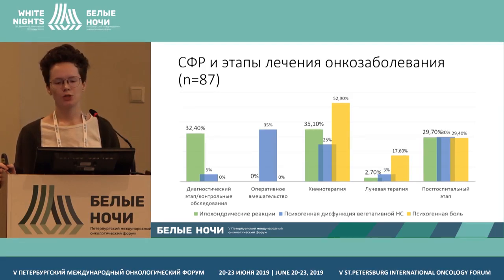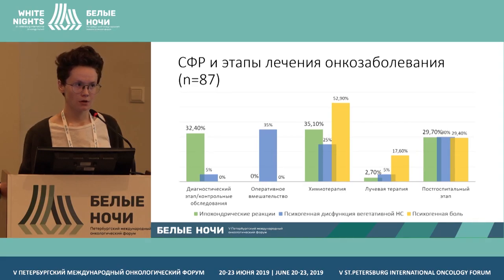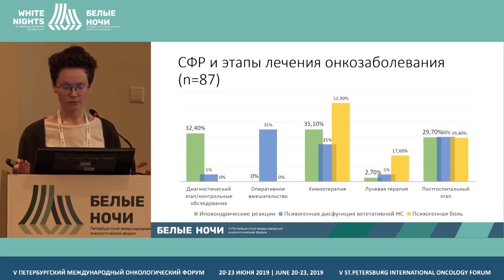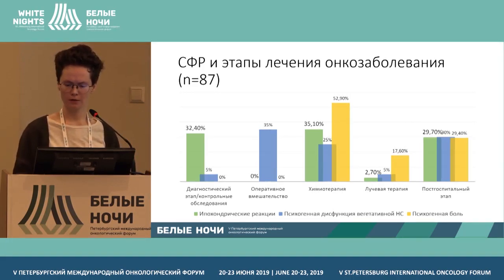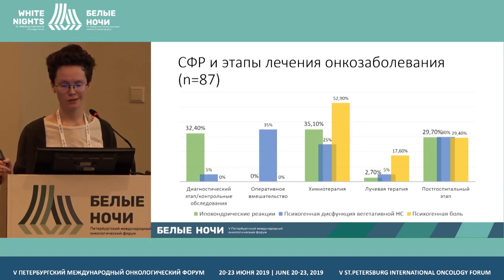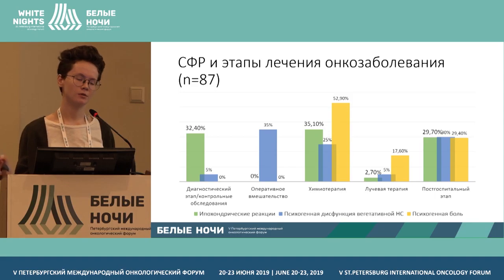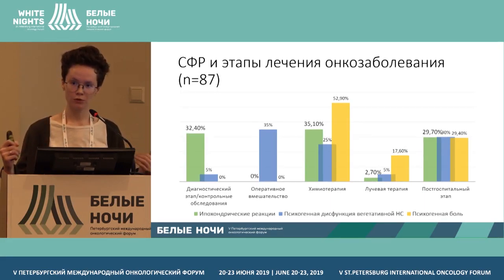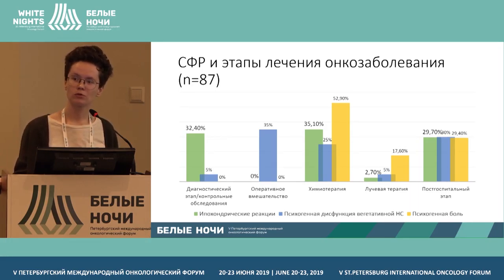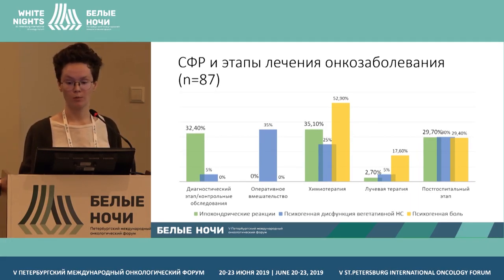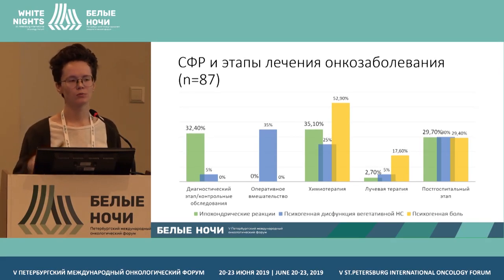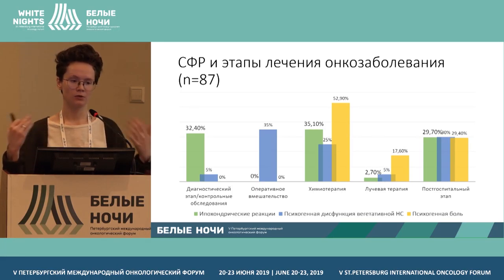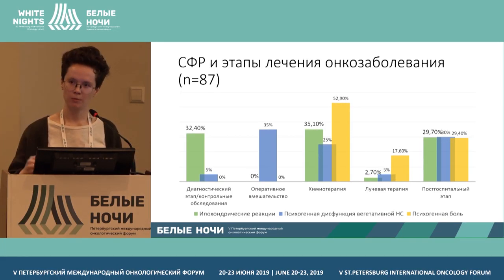The distribution based on stages of treatment is informative. Taking hypochondriac reaction, psychogenic dysfunction, and psychogenic pain — at the diagnostic stage, the chemotherapy stage, and the post-hospital stage when all treatment procedures are discontinued and only control visits remain, the patient feels they have lost control and are out of anyone's control. They demonstrate various reactions that will bring them back to the same doctor, who might say 'you are fine, your rash is psychogenic, it's not related to lymphoma' — but the patient would come again.